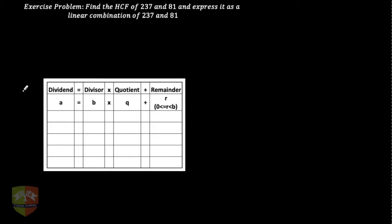Let's read the question. Find the HCF of 237 and 81 and express it as a linear combination of 237 and 81. We know how to find the GCD of two given positive integers by Euclid's division algorithm. The underlying concept we are going to use is Euclid's division algorithm.